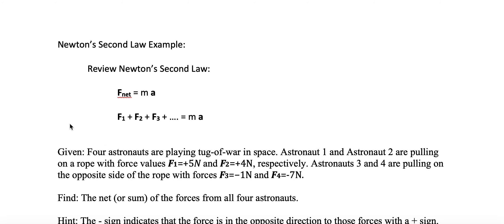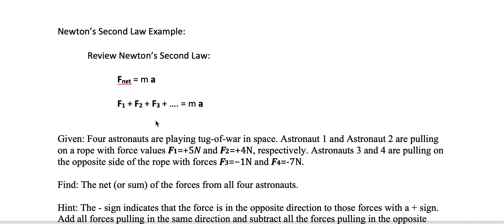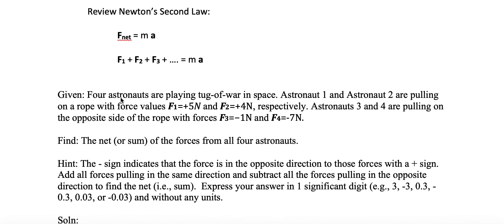So let's take a look at an example of Newton's Second Law. Four astronauts are playing tug-of-war in space. Astronaut one and two are pulling on a rope with forces F1 equal to 5 newtons and F2 equal to 4 newtons respectively. Astronauts three and four are pulling on the opposite side with F3 equal to minus 1 newton and F4 equal to minus 7 newtons. Find the net sum of the forces from all four astronauts.